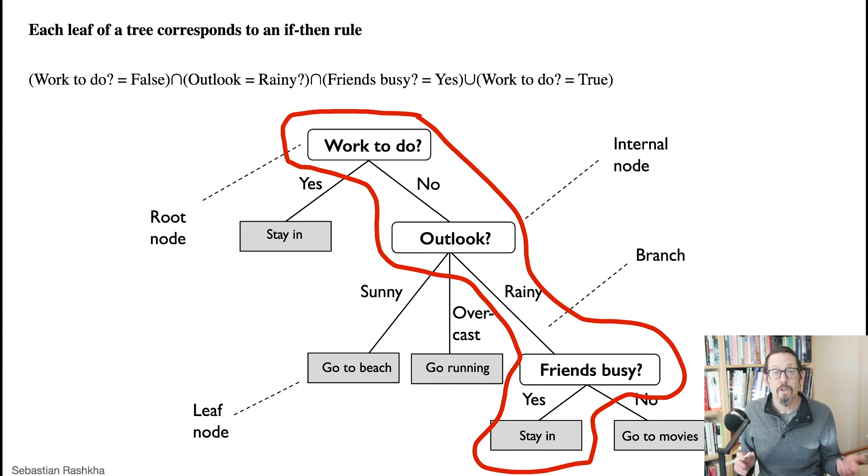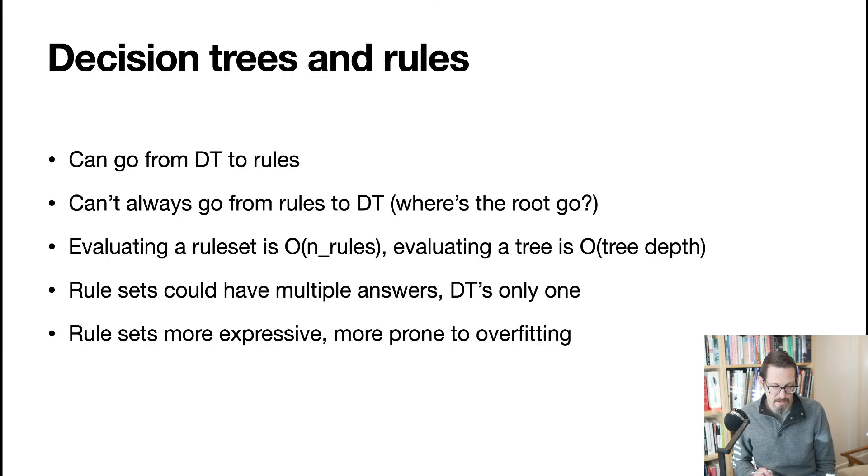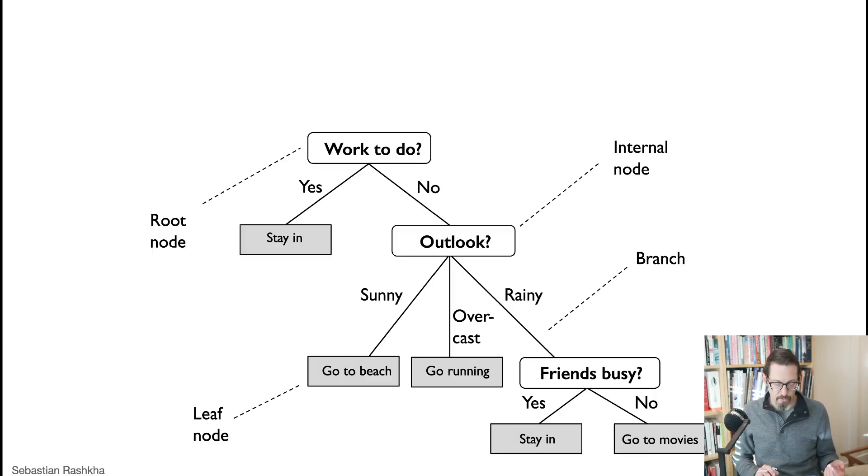All right. So when you can couch them in rules, well, this is, remember that meme I showed in the beginning of class about artificial intelligence is just a bunch of if-then statements? This is exactly what we were talking about. Artificial intelligence is really just decision trees, which are really just if-then statements. So you can always go from a decision tree to if-then rules. You can't always go backwards. So it may not be obvious where to place the root. Because remember, when we get a set of rules like this.